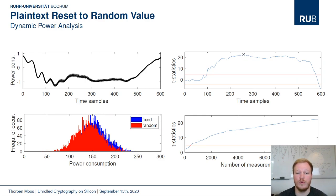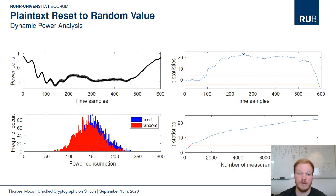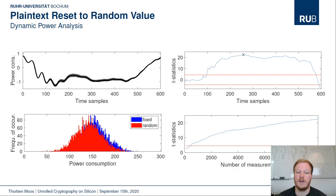When resetting the plaintext to a random value between encryptions, the noise level is even higher and distributions are much harder to distinguish. This is because the circuit's dissipation has become non-deterministic from the adversary's perspective: the transition from one random value to a fixed value has a very different power consumption footprint than a transition from a different random value to the same fixed one. Even if the attacker supplies the same input multiple times, dissipation will differ each time because the random reset creates a different previous circuit state. A toy example in the paper explains this in more detail.